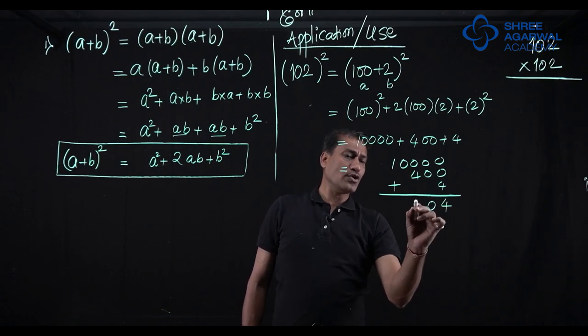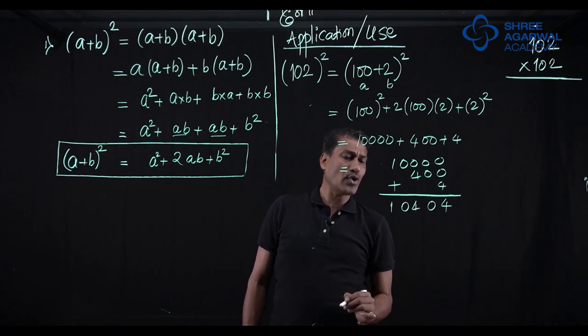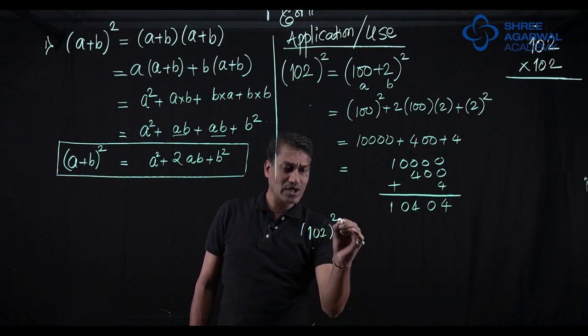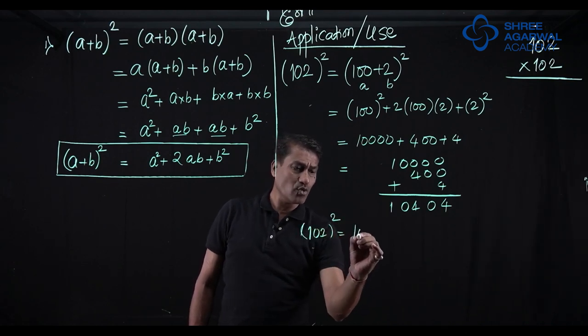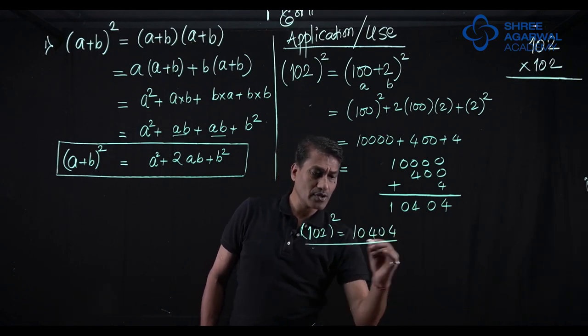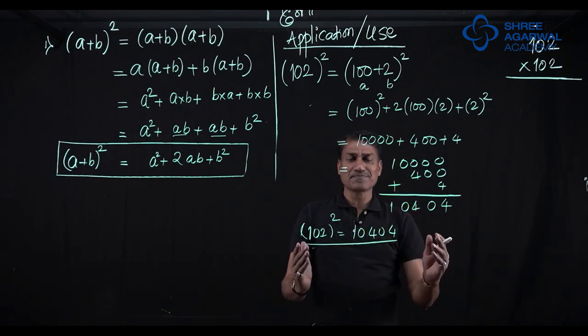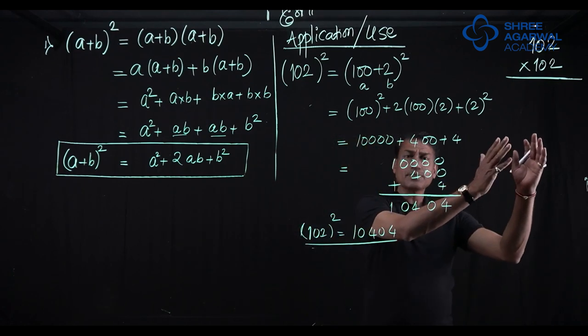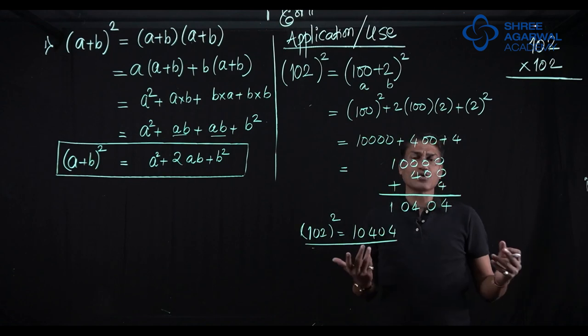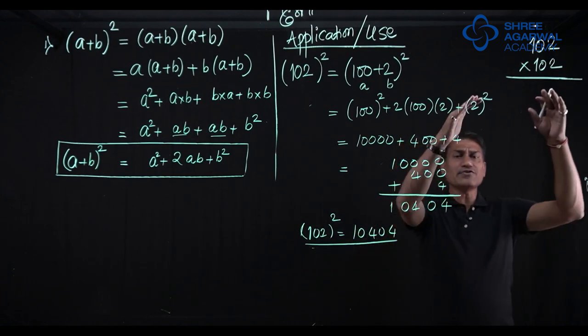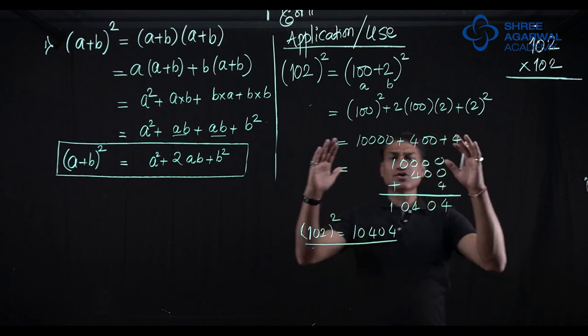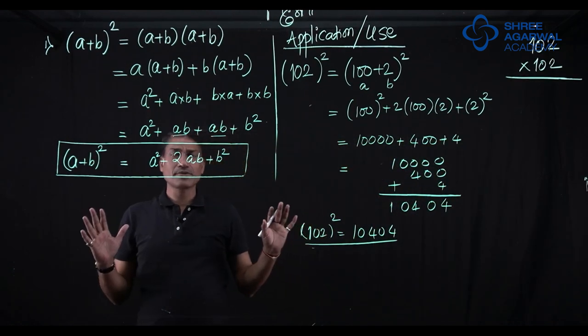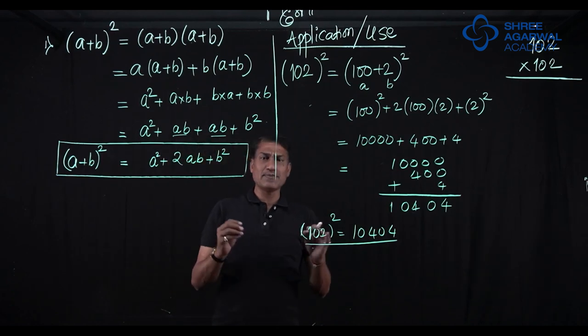So 4, 0, 4, 0, 1. It means 102 square is 10,404. We require less time. We did it very easily. If you do this by this method, the answer is going to remain the same. But here you have to multiply long time. This is very short. So this is a plus b bracket square, a square plus 2ab plus b square.